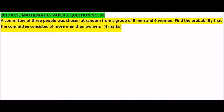This is a question that was tested in 2017 KCSE paper 2, number 14, on probability. I want to solve it here. It says a committee of three people was chosen at random from a group of five men and six women. Find the probability that the committee consisted of more men than women. We can use a tree diagram to do this.